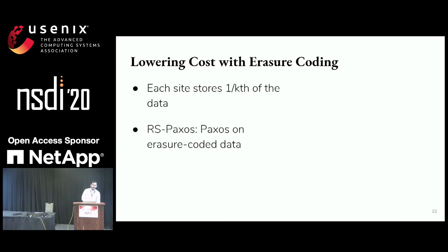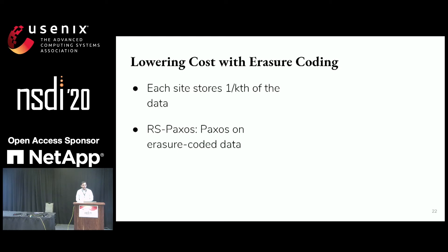For our purposes, erasure coding means we can store the equivalent of one k-th of the data at each site. k is a configurable parameter — it could mean half the data, a third of the data, and so on. As long as we can get k splits of the data, we're able to recover the value.